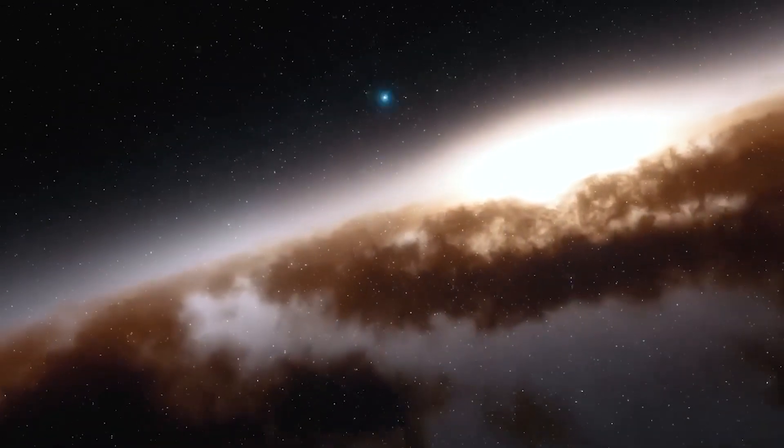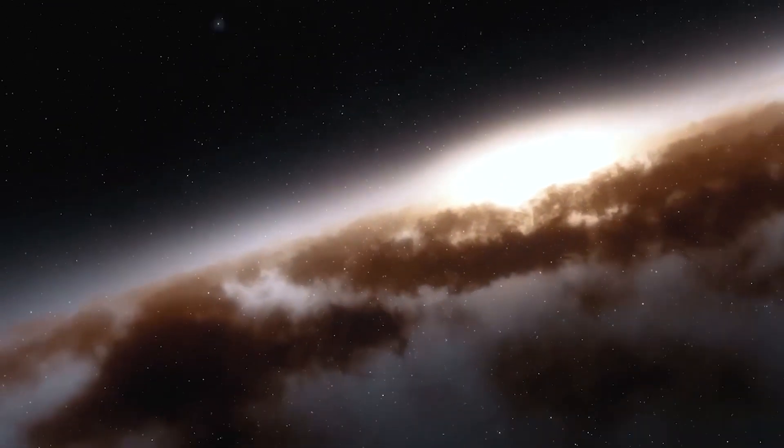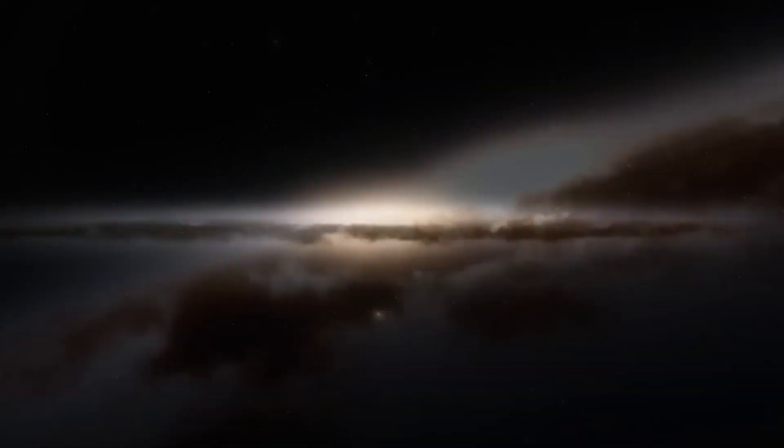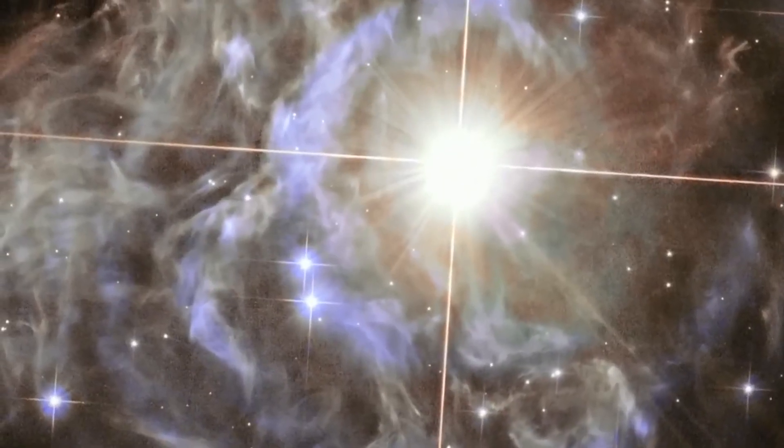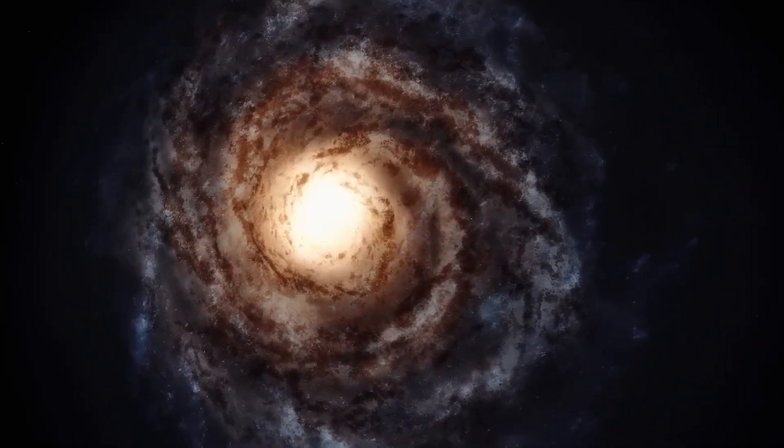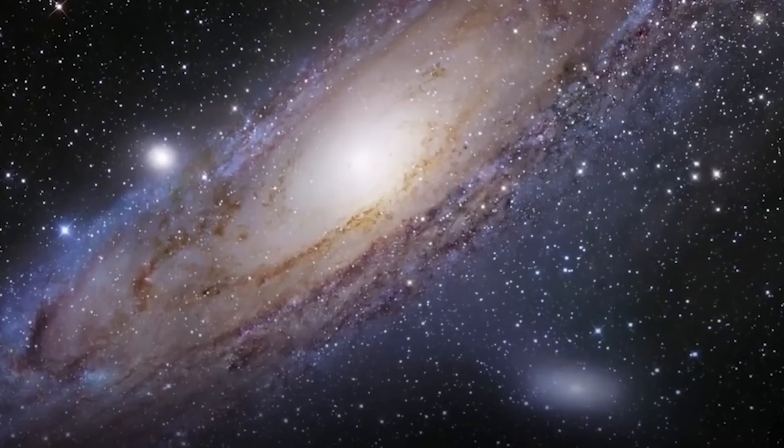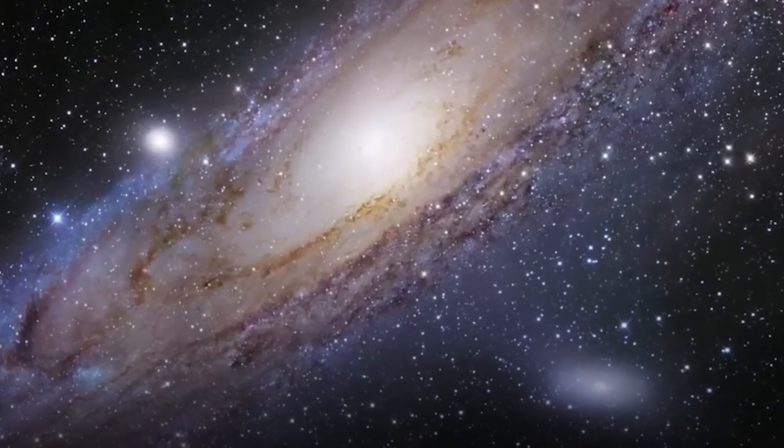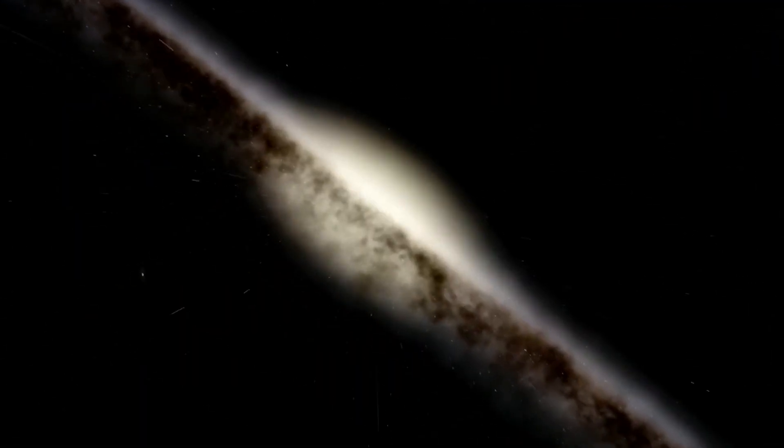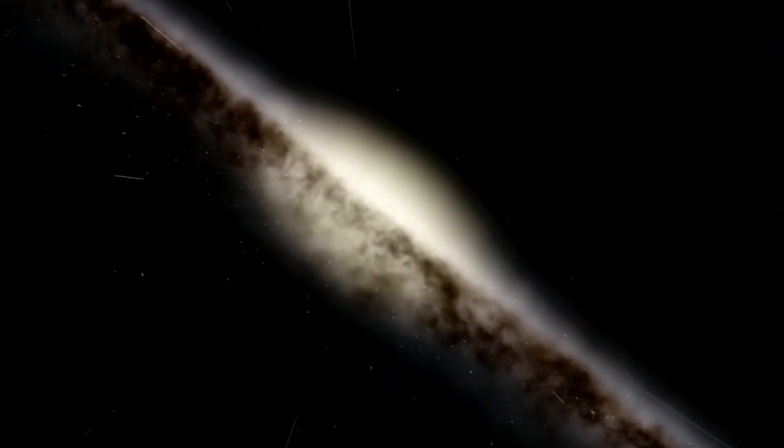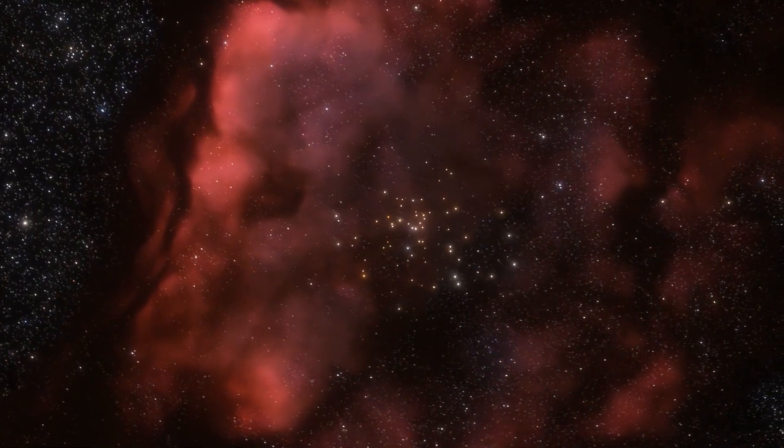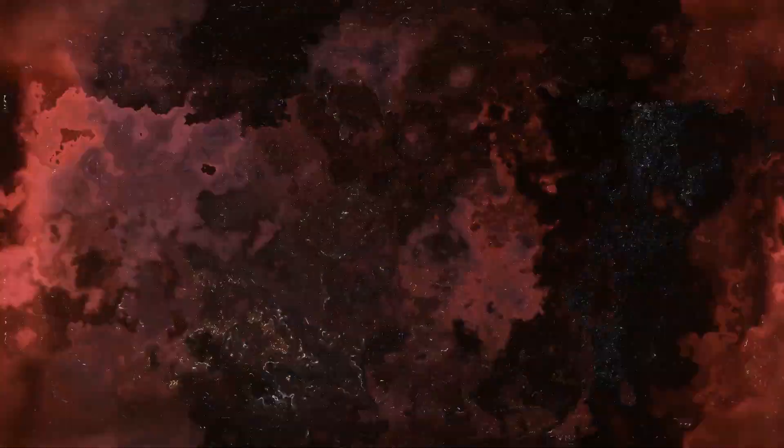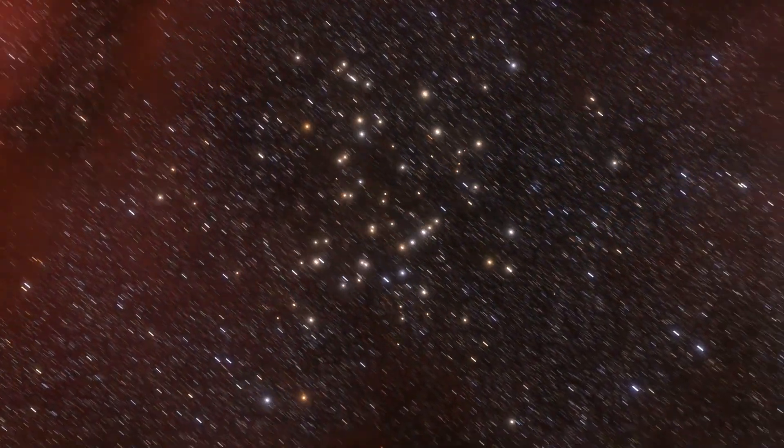Imagine, if you will, our observable universe as a grand cosmic show. We are privileged to have front row seats, but there's a catch. We're watching everything on a delay. When we observe a star located, let's say, 10 light years away, we're not seeing it as it is now. We're actually witnessing the light that left it 10 years ago. The farther away an object is, the older the light we observe. By examining objects at different distances, we can effectively map the history and evolution of the universe, providing us a glimpse into its awe-inspiring past.